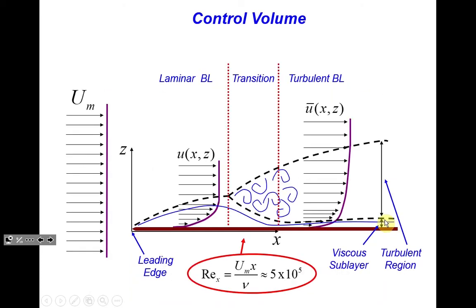The next topic is deriving the momentum integral equation — a simple but critically important equation for the whole concept of the boundary layer. We discuss the simplest form here, though more complicated forms can be derived following the same procedure. Instead of differential equations, we use a control volume approach, applying conservation laws to account for forces and momentum without involving the full Navier-Stokes equations.